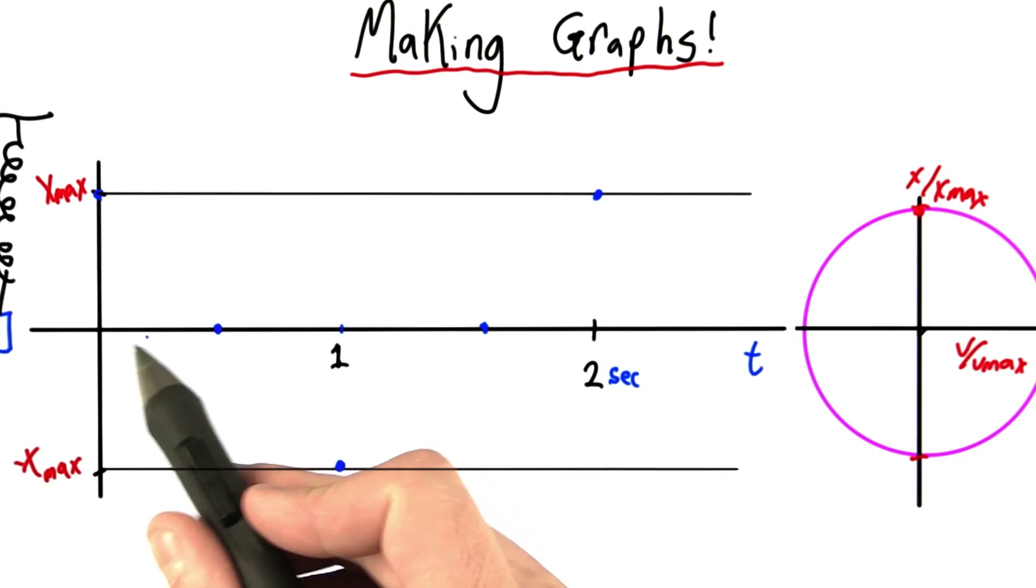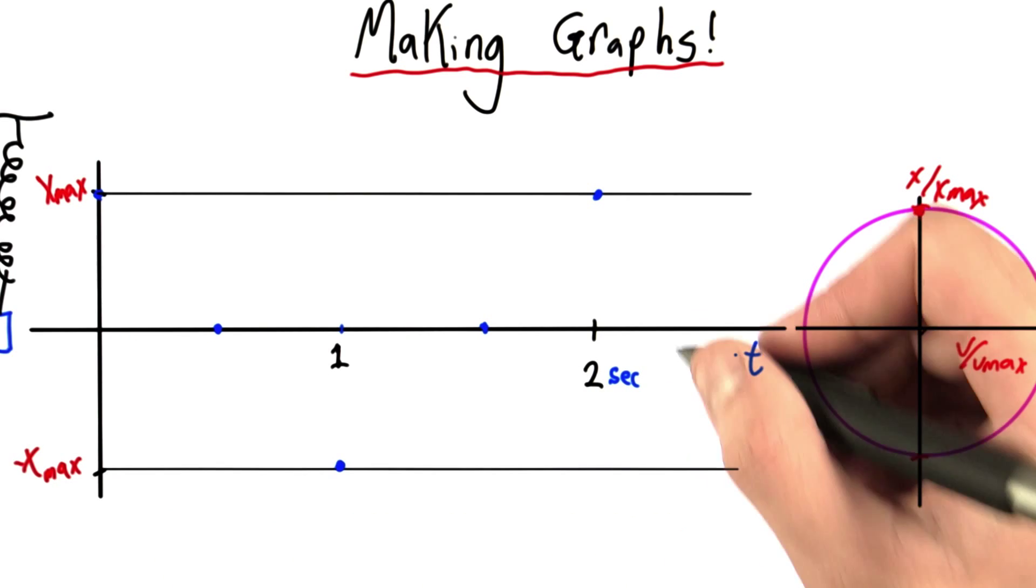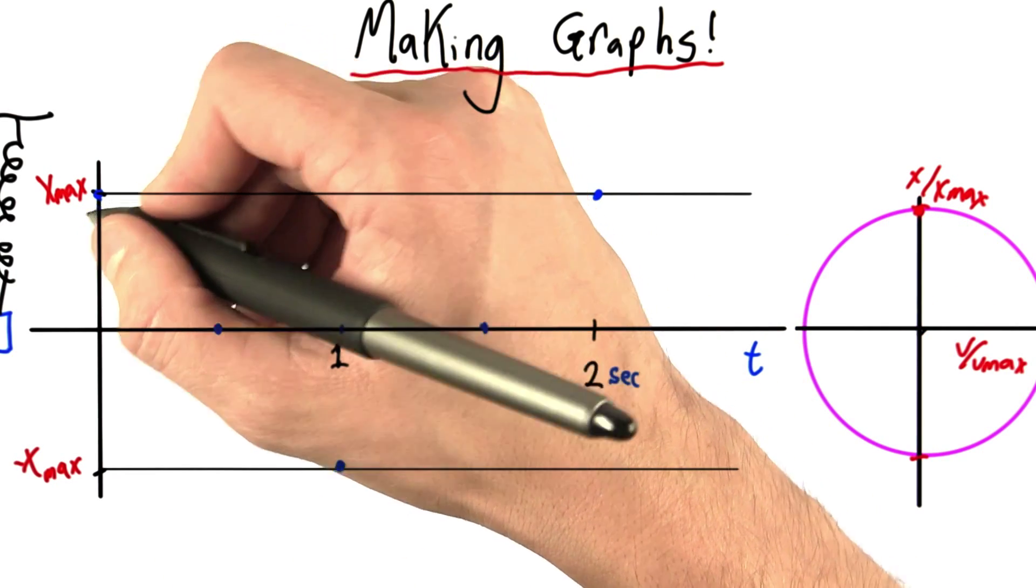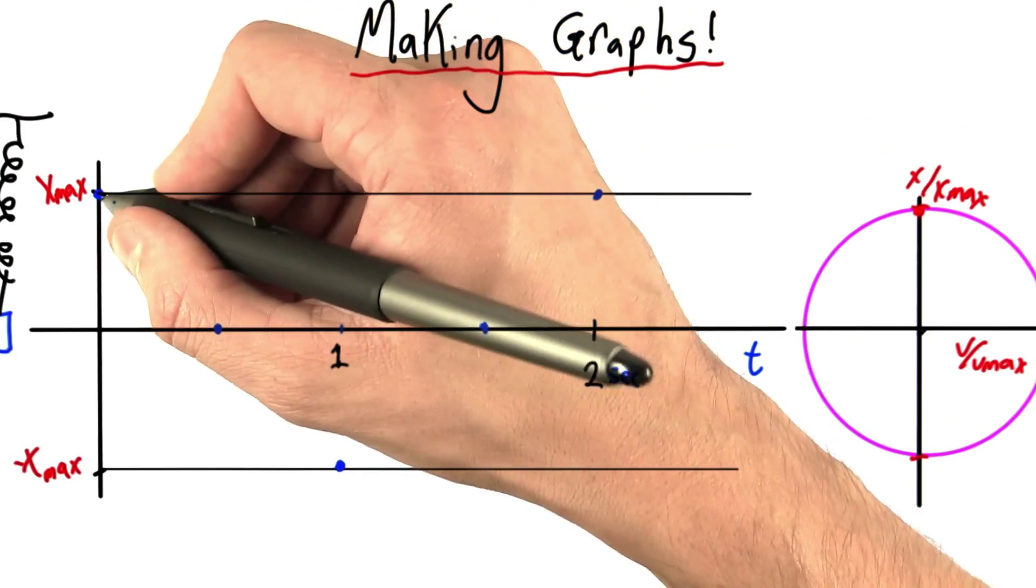It turns out that if you fill in more and more parts of this graph, more and more dots, you'll see a shape start to emerge. And you can fill in those dots using the math we learned in the previous video.